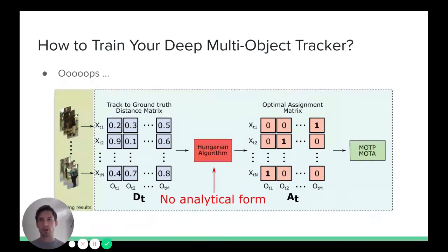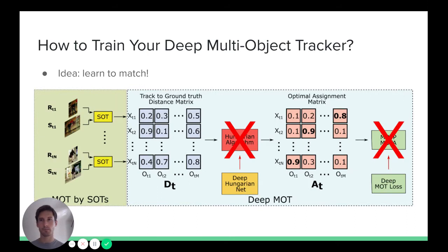This essentially means that it's not possible to train trackers to optimize performance with respect to MOTA and MOTP directly, as we cannot pass the gradients back to the tracker through this matching function. Because of that reason, the community was so far resorting to all sorts of proxy losses that did not directly correlate with MOTA and MOTP.